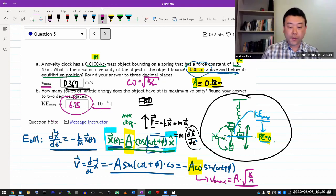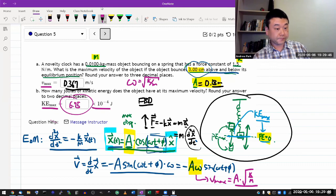So, yeah, that's the second way you can do it. Once you get VMAX, then kinetic energy, you get it the same way through the expression of kinetic energy. So, yeah, that's question five.